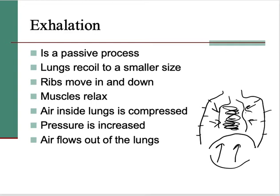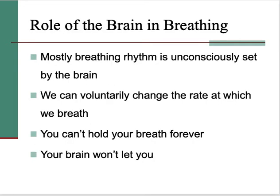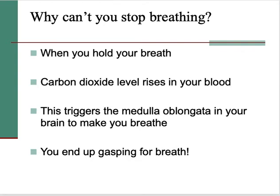How is the brain involved in all of this? The brain sets the rhythm of breathing in an unconscious way. There's a region of the brain called the medulla oblongata, which monitors the amount of carbon dioxide in the blood that flows through it. Over a short period we can control our breathing — for example when singing or doing a reading — but you can't do that forever. If you held your breath, the carbon dioxide levels in your blood would rise, and that gets picked up by the medulla oblongata, which sends out a signal to make you breathe quickly or gasp for breath.